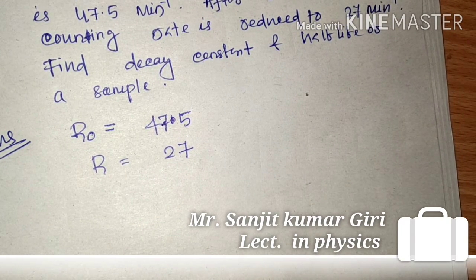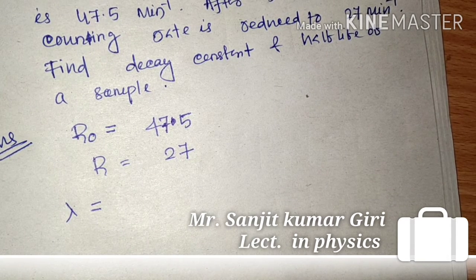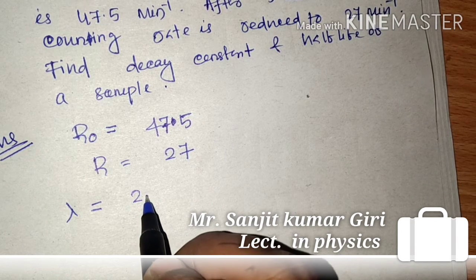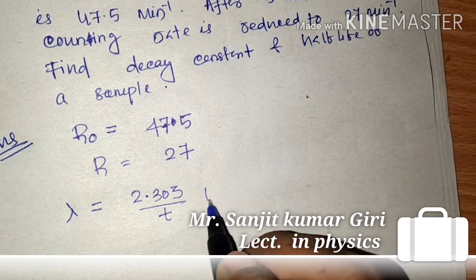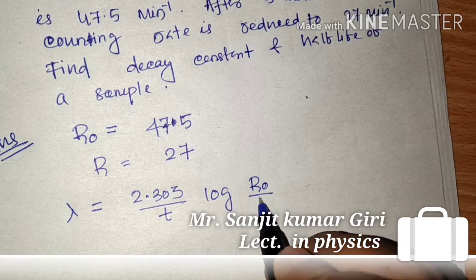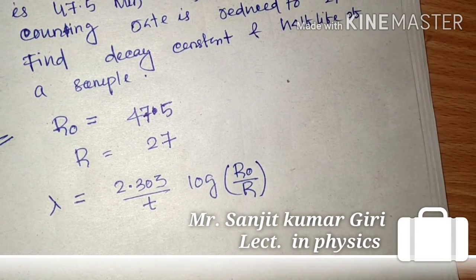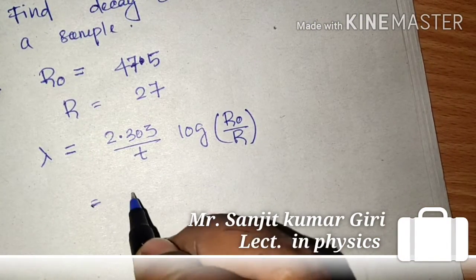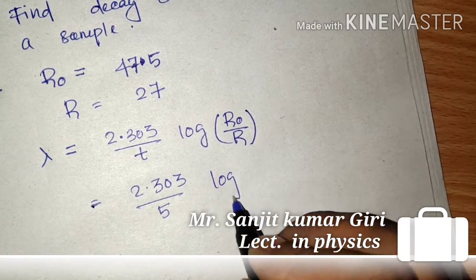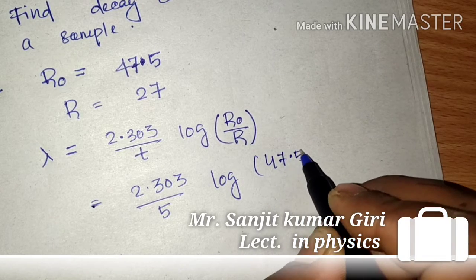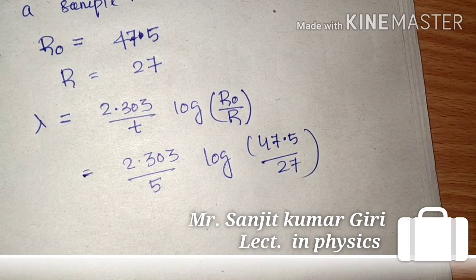So what will be the equation? Now we know that lambda equals 2.303 by small t log R0 by R. So this is equal to 2.303 by 5, this is log 47.5 by 27.